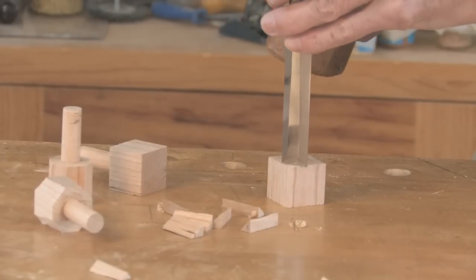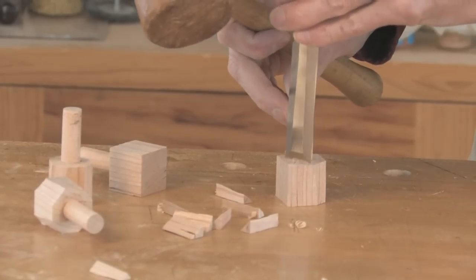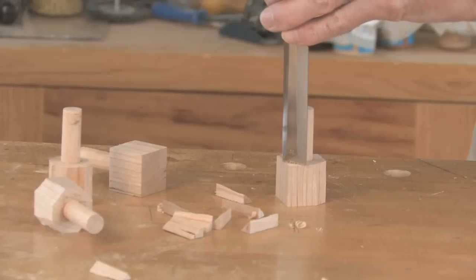After we're done with the bandsaw, I go over to the bench, take a chisel and just knock the four corners off. It makes the next couple of steps a little easier.